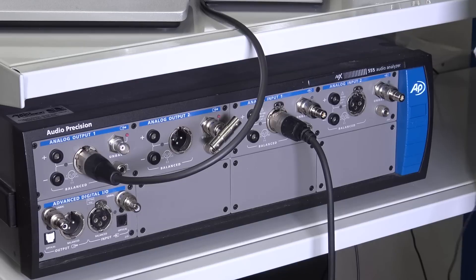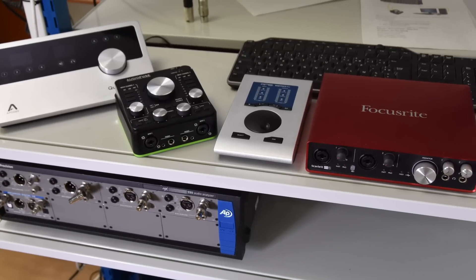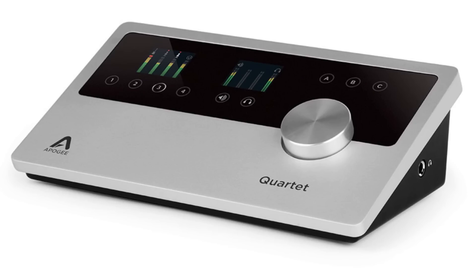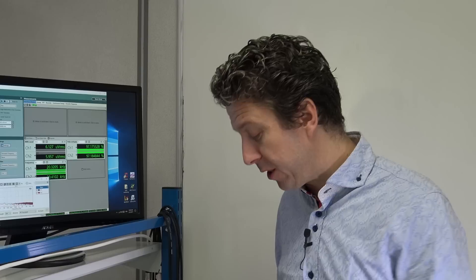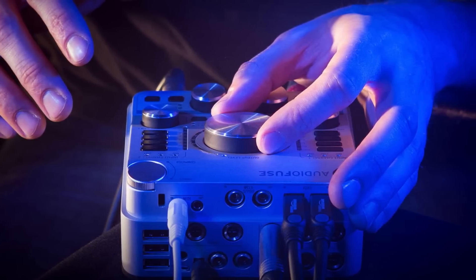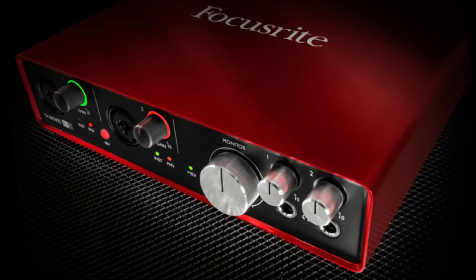So we have a test rig and we have a selection of interfaces along similar price points. We have the Apogee Quartet which is currently retailing for around 1400 euros. We have the RME Babyface which is currently around the 700 euro mark. We have the Arturia Audio Fuse again about the 600 euro mark and to put things in perspective because there are about a billion of these things out there, we have a Focusrite 6i6 which is around the 200 euro mark.